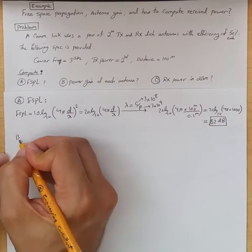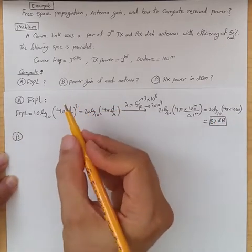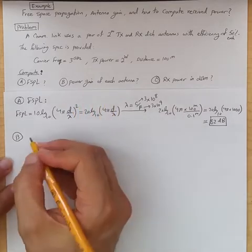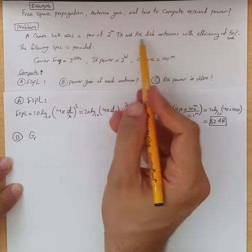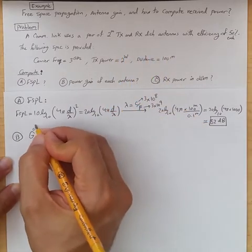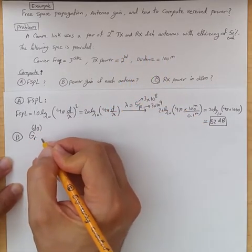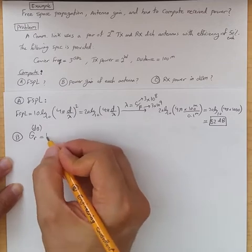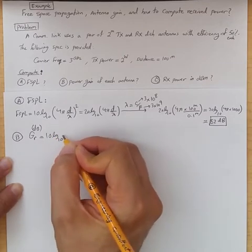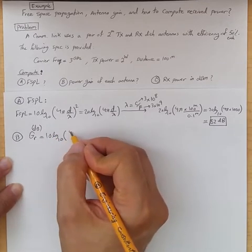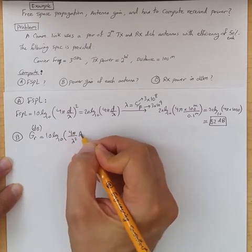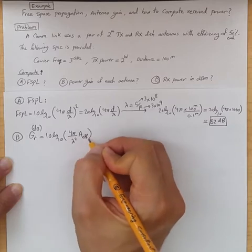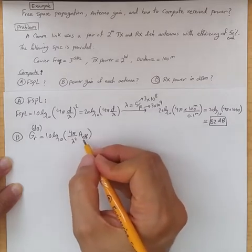Now, part B is asking us to compute the power gain of each antenna. Power gain of receive antenna and transmit antenna would be the same because they are the same type of dish antennas. And dB would be 10 log, this is a well-known formula, 10 log 10 of (4π over λ squared) times A, which is the effective aperture of the antenna.